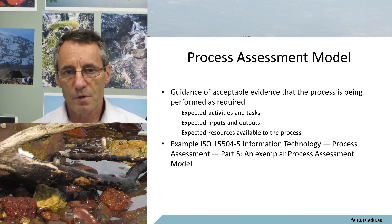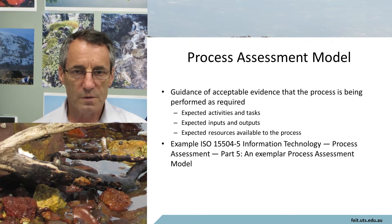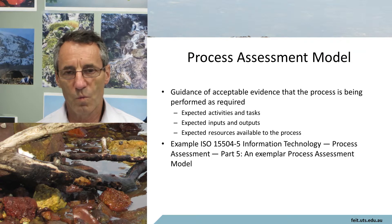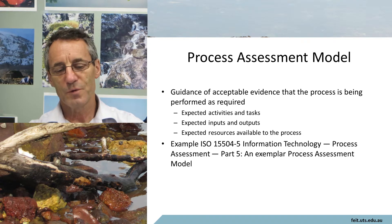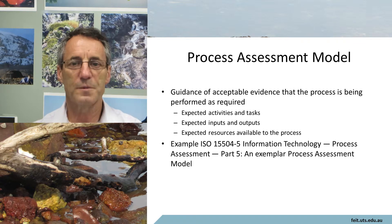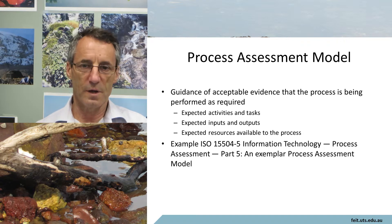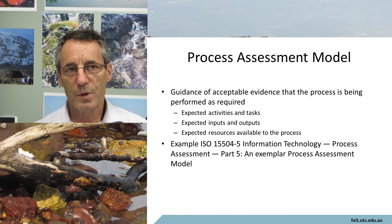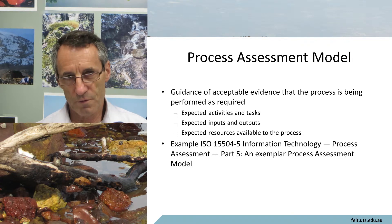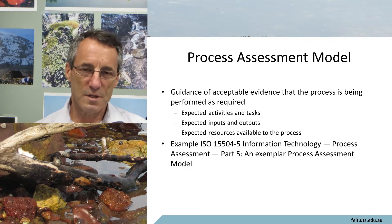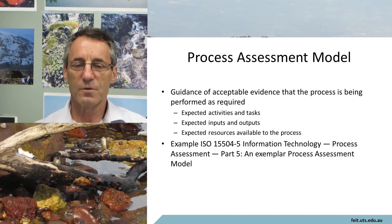For each process reference model, there needs to be a process assessment model. It's difficult to do an assessment without one. The job of the assessment model is to say what kind of evidence would be expected for that process — to take the reference model and add what kind of evidence you would expect to see in order to determine whether the capability requirements and outcomes had been met. As a comparison of size, the ISO 12207 process reference model is about 40 to 50 pages, while the process assessment model is 212 pages.